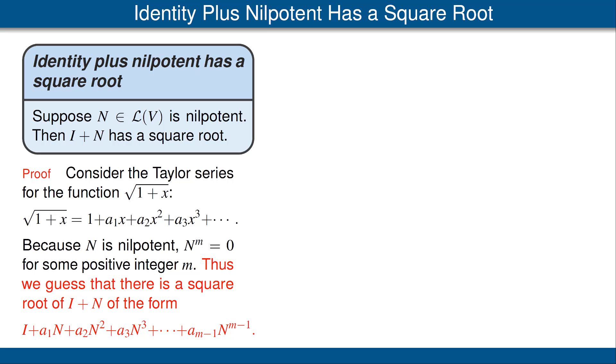However, N to the mth power and all higher powers is 0. So what looks like an infinite series there is actually a finite series. All the terms after N to the mth power are 0. So we're just going to guess that there's a square root of the form shown in the last line here. We're not using anything about Taylor series. At this stage, that's just a guess.